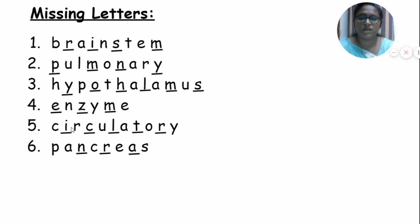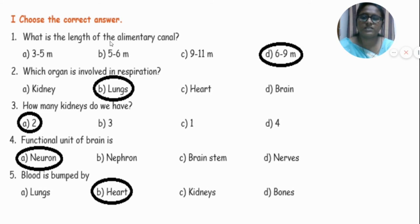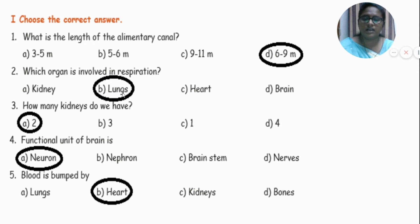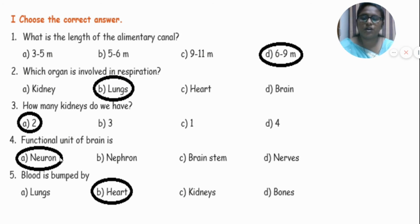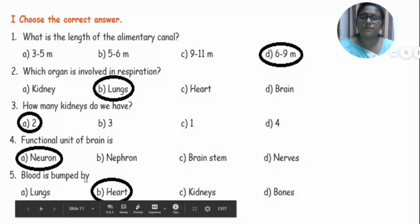Now let's move on to missing letters: brain stem, pulmonary, hypothalamus, enzyme, circulatory, pancreas. Now let's move on to choose the correct answer. What is the length of the alimentary canal? The answer is 6 to 9 meters. Which organ is involved in respiration? Lungs. How many kidneys do we have? Two kidneys. The functional unit of the brain is — neuron. Blood is pumped by — heart.